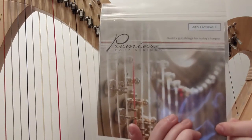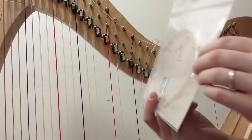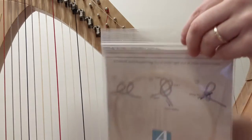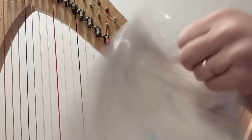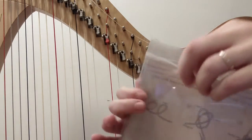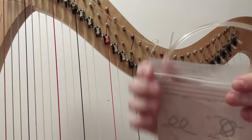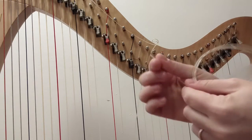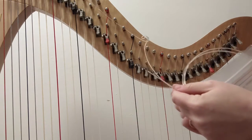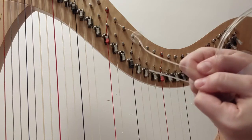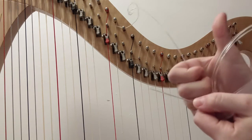So I'm going to pull out my fourth octave E, and if I have any question about whether or not that's the right string, which I always will, you're going to pull out the end of the string and compare its thickness to the remainder of string you have left. I can see here that they are exactly the same, so I'm going to go ahead and use this.